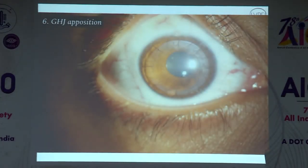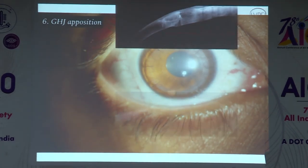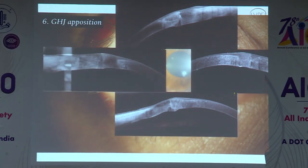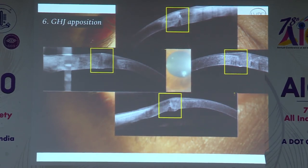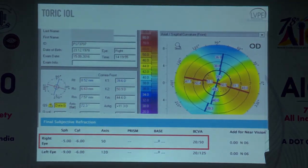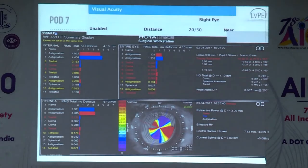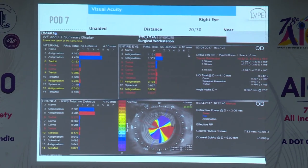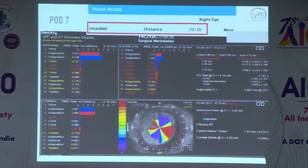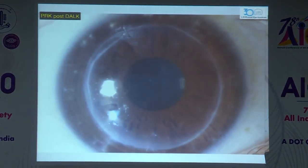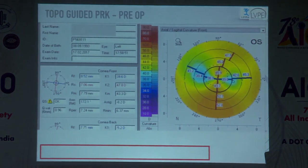It is important to have good graft-host junction apposition to keep astigmatism low. Any ectasia at the inferior graft-host junction post-op is not desirable. Post-DALK, you can also do IOLs — an ICL or toric IOL. One patient with 12–13 diopters of astigmatism was successfully treated with the Ultima Smart Toric IOL, achieving 20/30 unaided vision after DALK. Topo-guided PRK post-DALK also works very well for residual astigmatism.